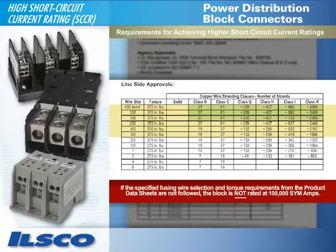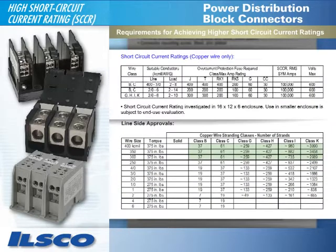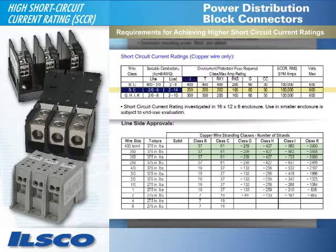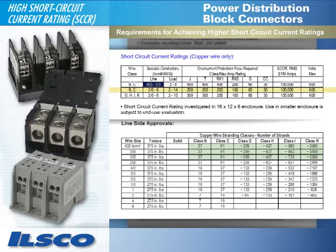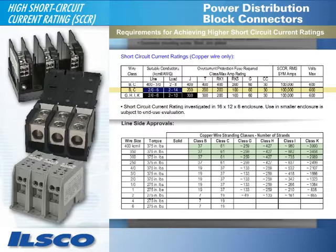Let's look at another example. On line 2 of the same chart, the wire conductor classes are B or C. The suitable conductors for line are 2-0 to 6; load is 2 to 14. For class J fuse ratings, it's 200 amps. This combination of components can be rated at 100,000 SIM amps. Conversely, you cannot use a 400 line wire and a number 10 load wire. You also cannot use a line conductor of 2-0 to 6 and a load conductor of 10 with a 300 amp class J fuse and still achieve a 100,000 SIM amp rating.